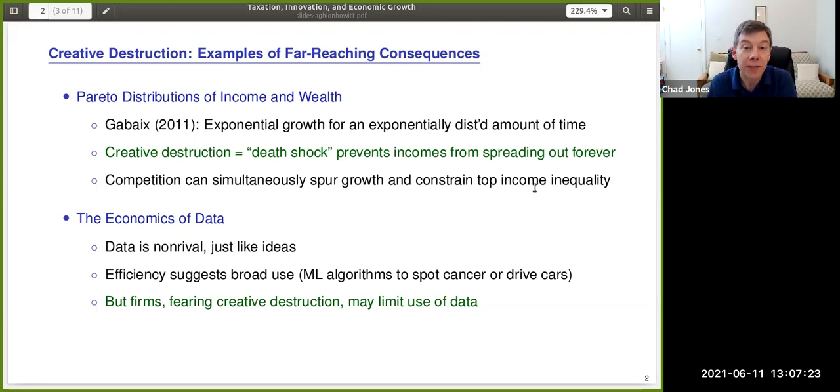But if you look at firms' incentives, firms own or have access to a lot of data, and they have lots of incentives to limit the use of that data because they fear creative destruction. If the data were used broadly, some other company might come up with a self-driving car or the best cancer spotting algorithm. These are just two examples of how creative destruction has broad consequences for many different questions in economics that we study.